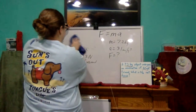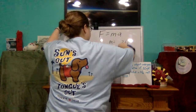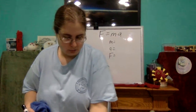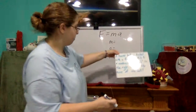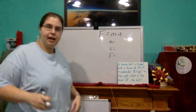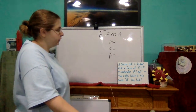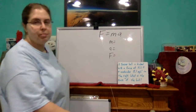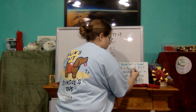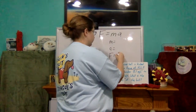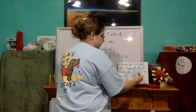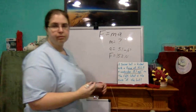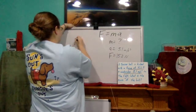Let's do another one. A soccer ball is kicked with a force of 15.2 newtons and accelerates 5.1 meters per second squared to the right. What is the mass of the ball? So what do we know? We know the force — 15.2 newtons. We know the acceleration — 5.1 meters per second squared. And we're looking for the mass. Let's go ahead and plug it in. We have F equals M times A.